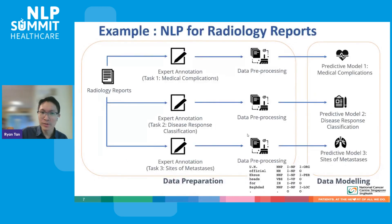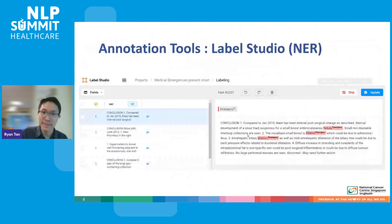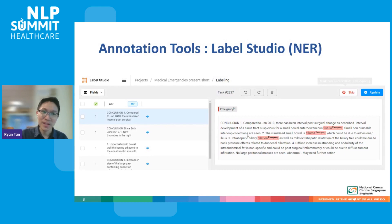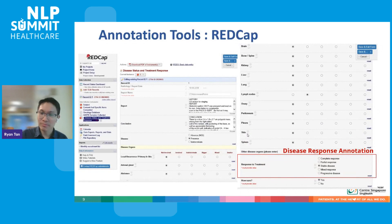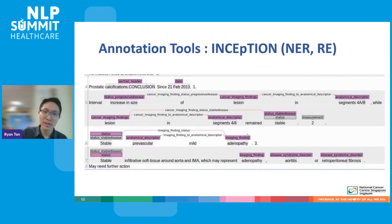With these initial radiology reports, key things that the research team would want to know are complications, response to treatment or non-response to treatment, as well as sites of spread of the cancer called metastasis. We started with various tools for annotation. Label Studio was one we found to be good and very user friendly for annotating entities — in this case, the annotator was annotating medical emergencies. For simple things like just classification of the report, we found RICCAP to be very useful to classify whether a patient was responding, stable, or progressing on treatment. And when we needed to do more complicated annotations such as highlighting relations between words, we found Inception, another open source tool, very useful.